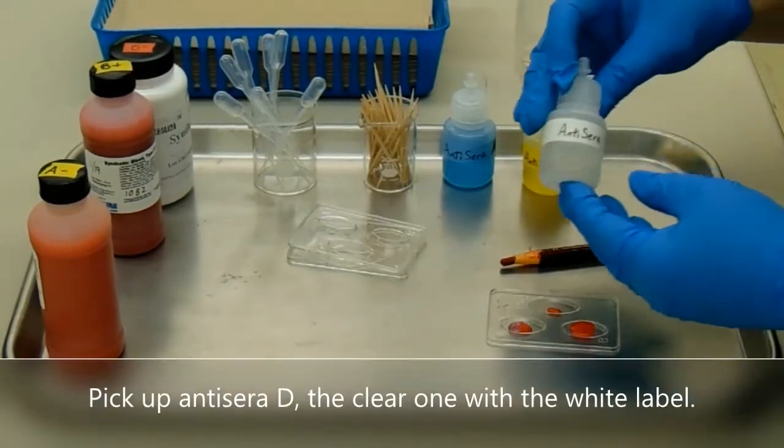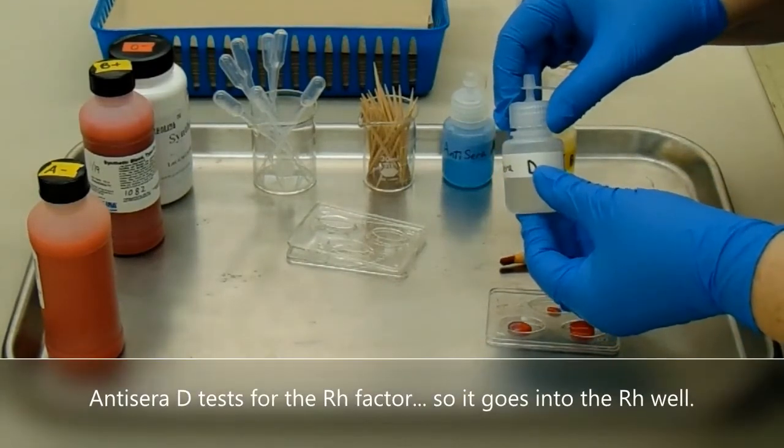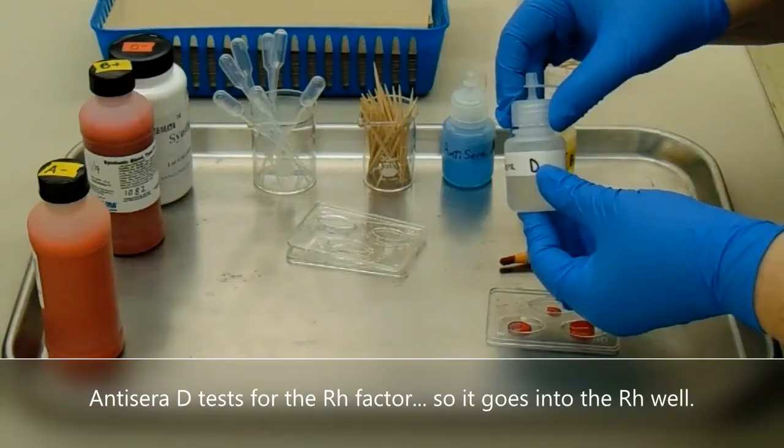Pick up antisera D, the clear one with the white label. Antisera D tests for the RH factor, so it goes into the RH well.